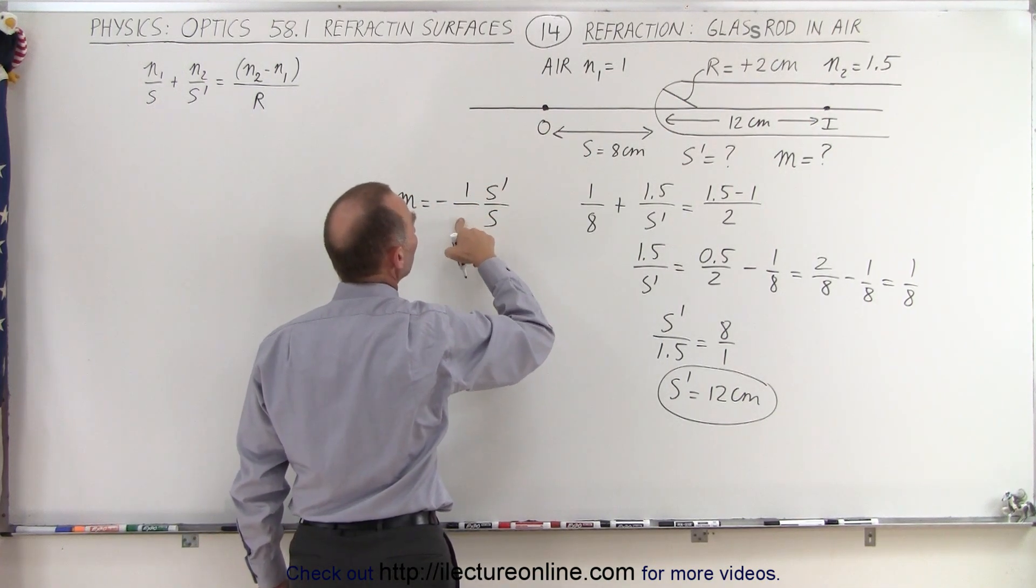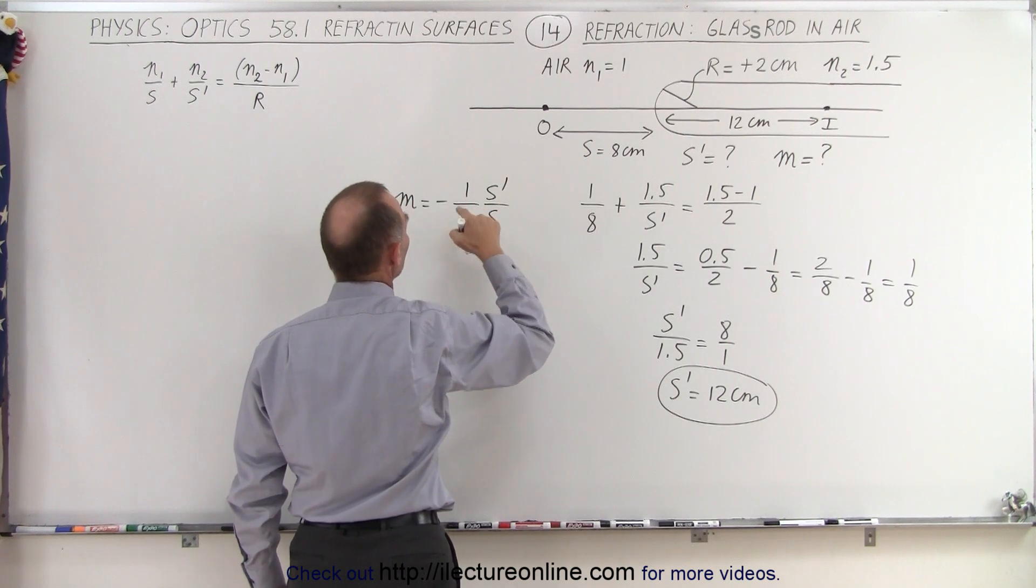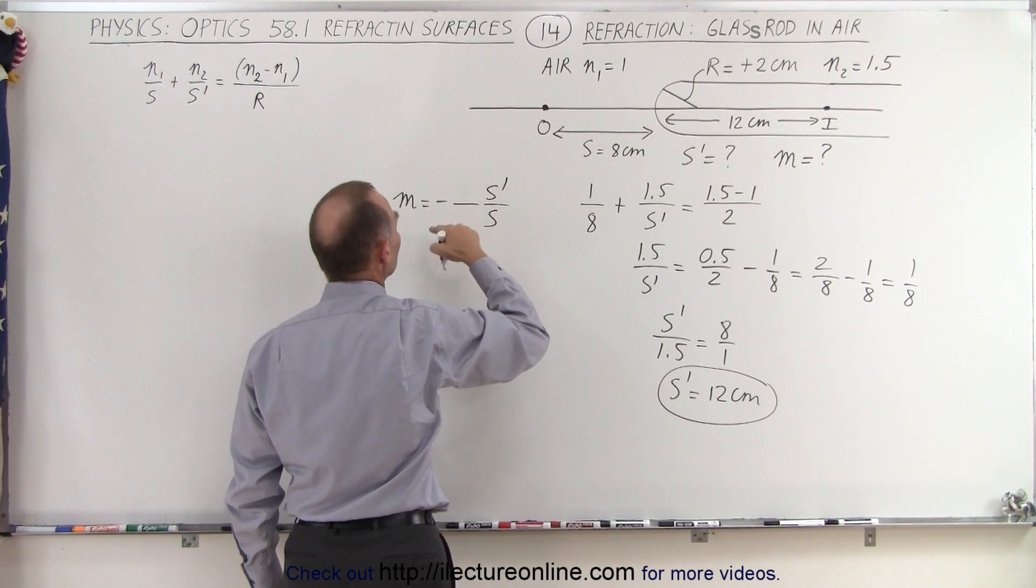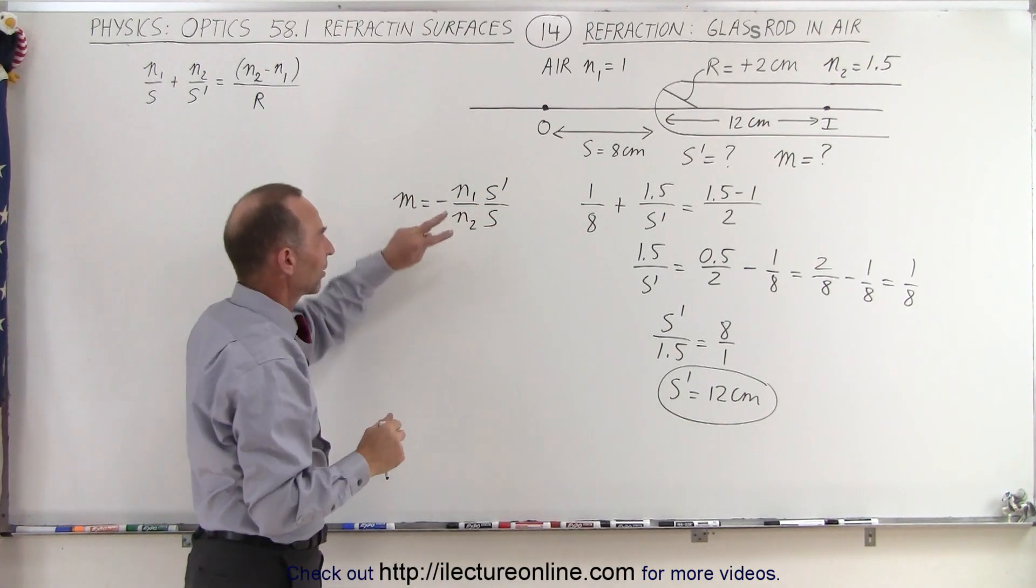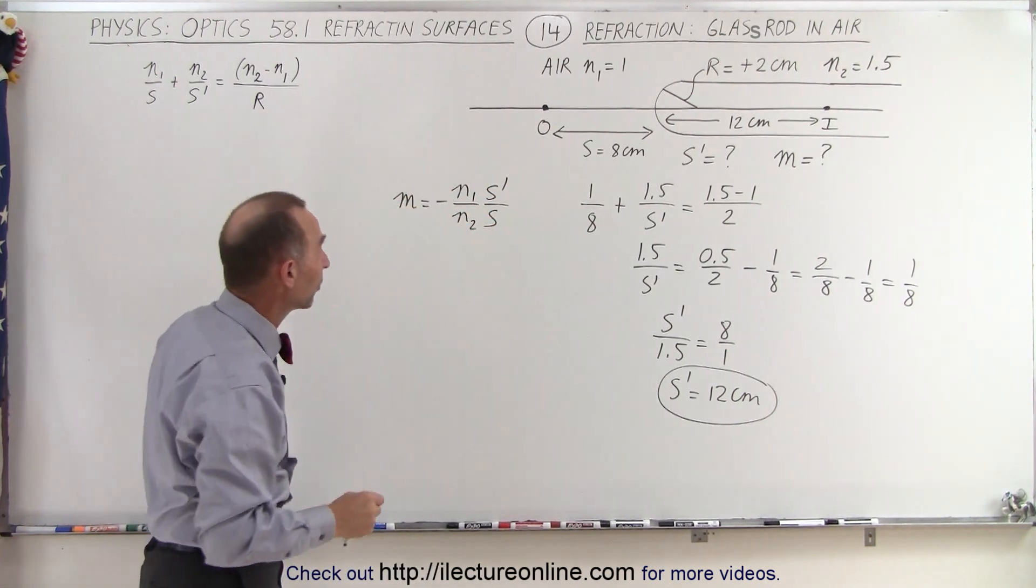which is where the object is at, which is 1, and at the bottom we put 1.5. So let me go ahead and put the general equation in. So this is going to be n1 over n2. So it looks like it's reversed, but that's actually the way it's supposed to be.